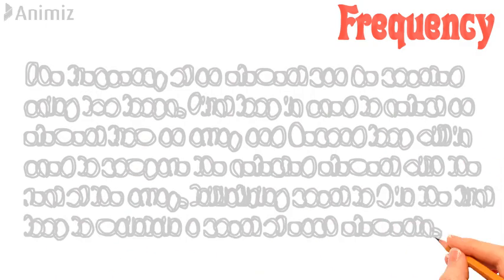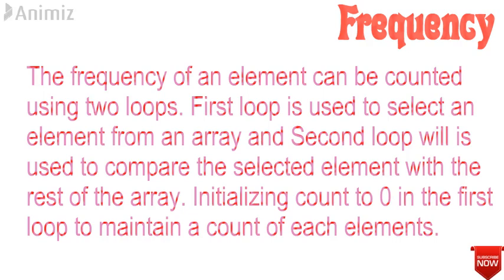The frequency of an element can be counted using two loops. The first loop is used to select an element. The second loop is used to compare the selected element with the rest of the array. The count is initialized to zero in the first loop to maintain the count of each element.